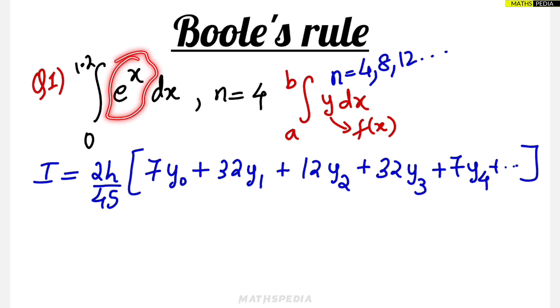Now we have to find the h value. h is nothing but (b - a) / n. What is b? The upper limit. While comparing, the upper limit is 1.2, lower limit is 0. Substitute the values: 1.2 minus 0 divided by n. n is nothing but 4, so 1.2 divided by 4 is 0.3.